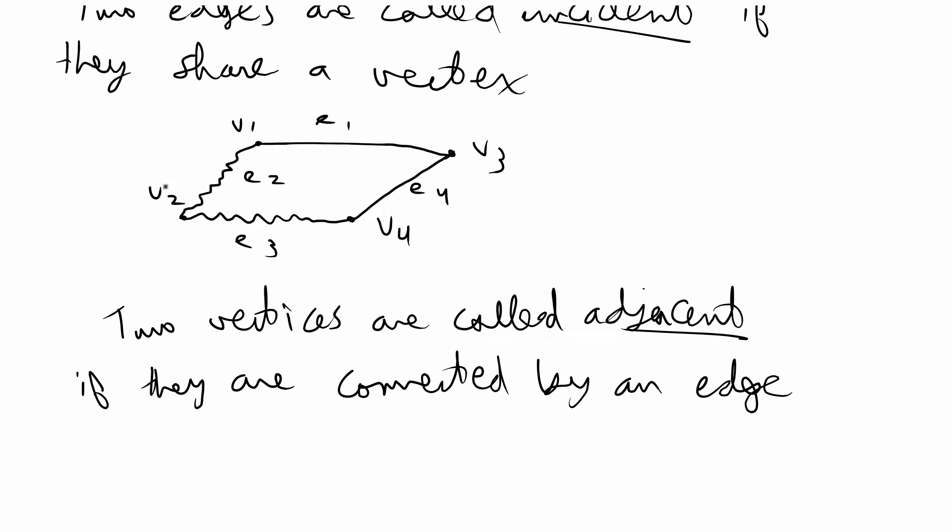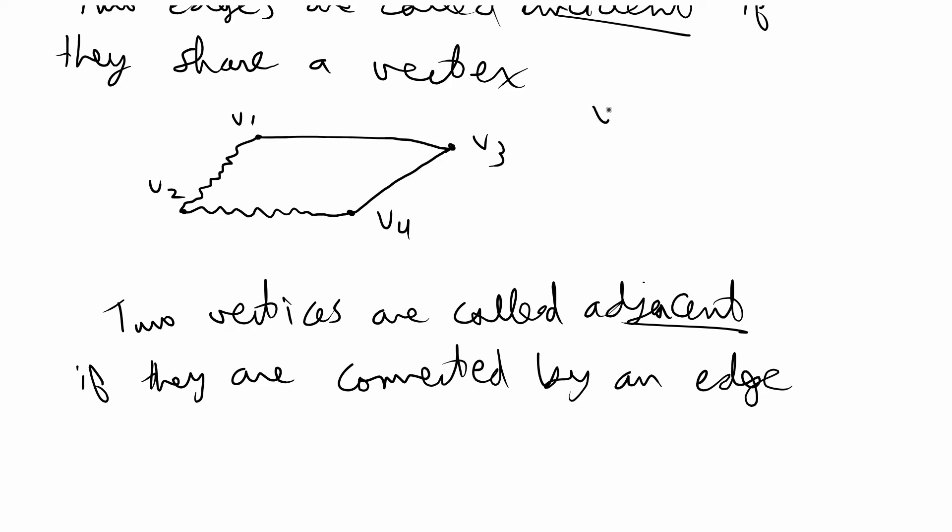Then two vertices are called adjacent if they are connected by an edge. For this graph, V1 and V2 are adjacent because they have edge 2 in common. Same thing for V1 and V3 but V4 and V1 are not adjacent because they do not share an edge directly. If I drew an edge E5 here then they would be adjacent. If you were looking at this as a set, you would have the set V1, 2, 3, 4 and you would have these four ordered pairs of edges so you would know that 1, 4 was not in the set of E and therefore it's not adjacent.